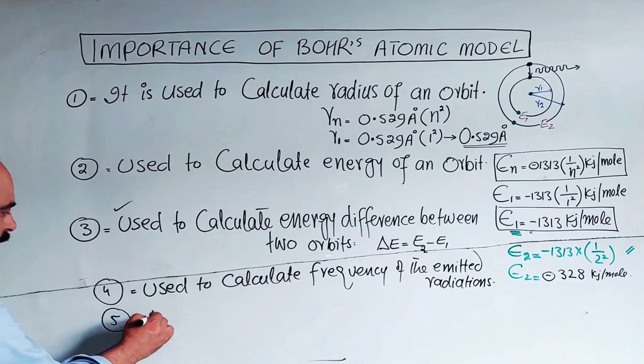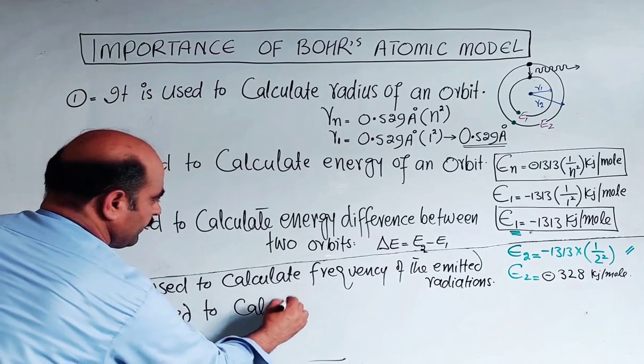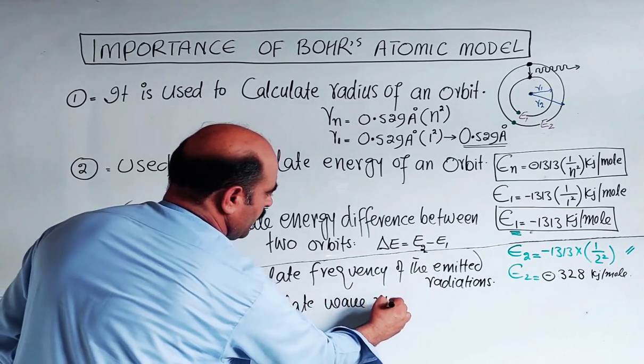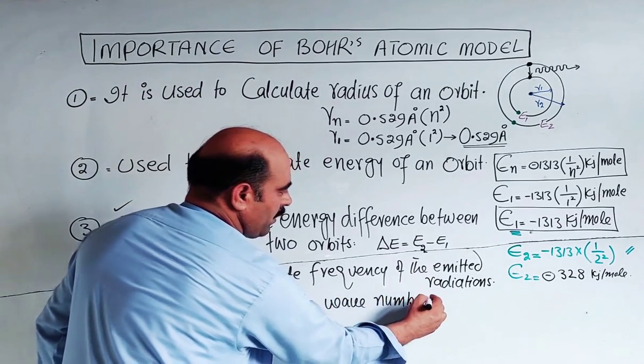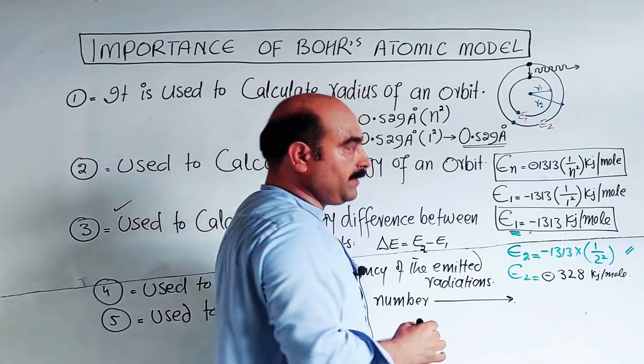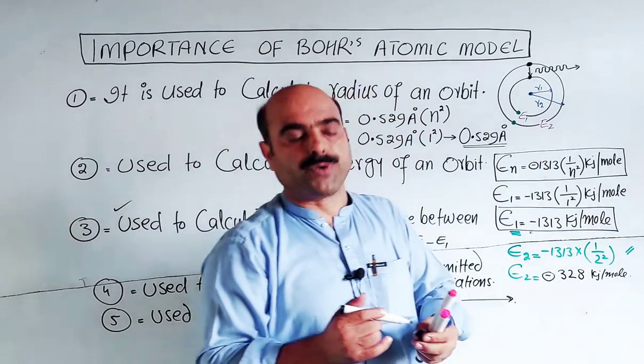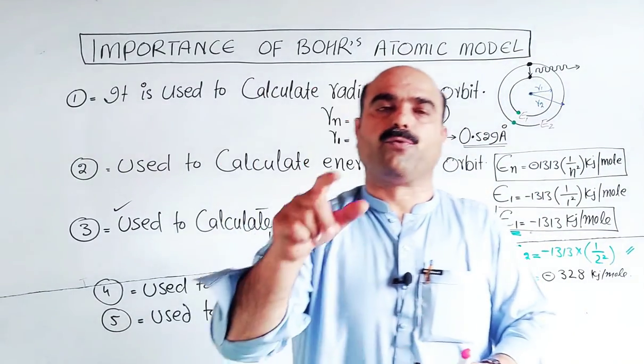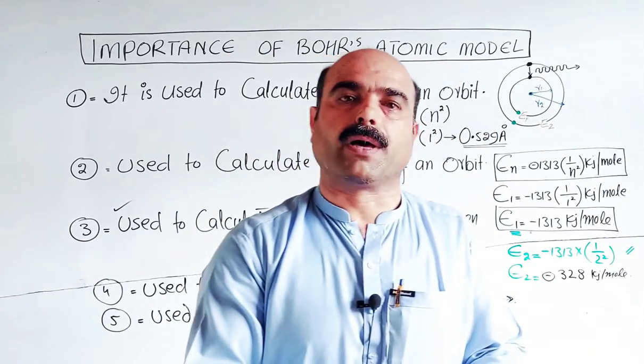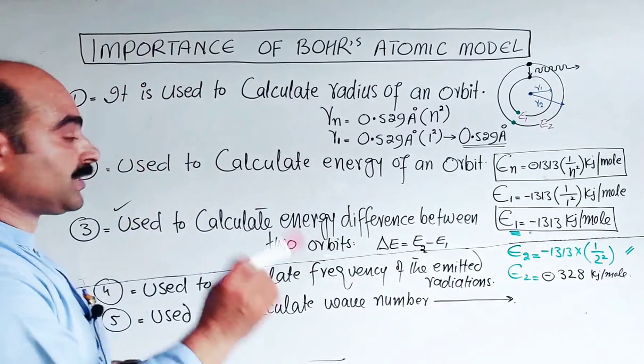Last one: Bohr's atomic model is used to calculate wave number of the emitted radiations. When electrons go from high energy level to low energy level in the form of light radiation, the radiation has a wave number. Wave number is the number of waves per unit area.